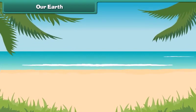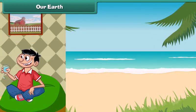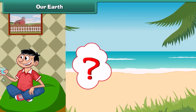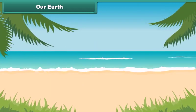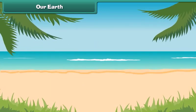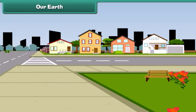We breathe in air and drink water daily. But do you think that we can live without air and water? No, it is not possible. Our Earth gives us air and water to live. It also gives us land to make roads, houses and buildings to live in and work, and parks to play around.